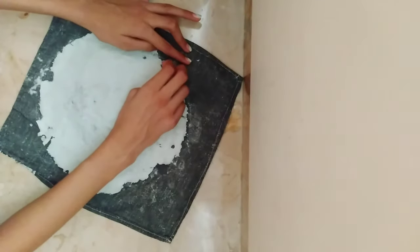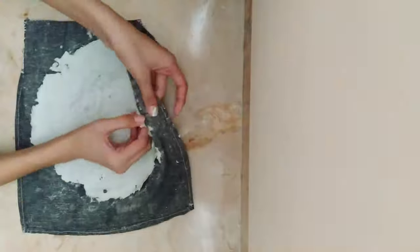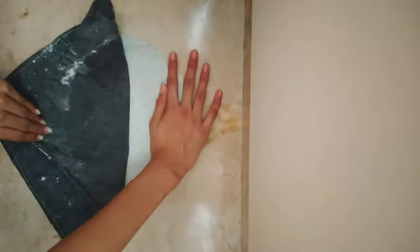After the paper has dried, remove a bit of the paper from one side, then flip the cloth and remove the paper as shown.